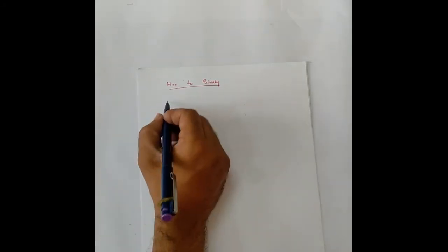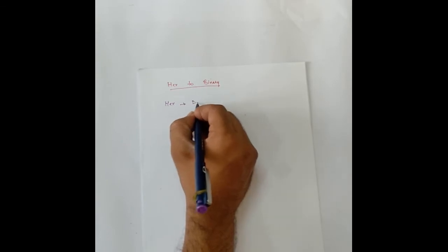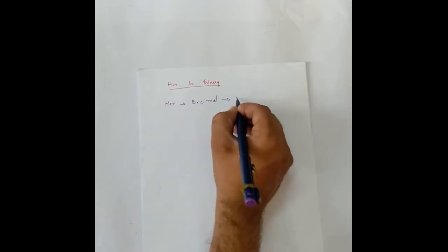To convert hexadecimal to binary, what we'll do, we'll do it in two steps. We'll first convert hex to decimal and then from decimal to binary.